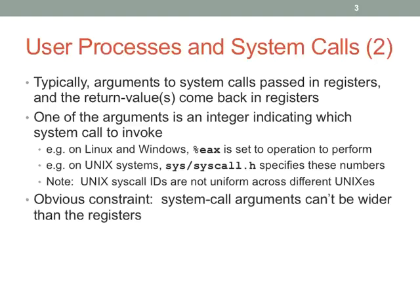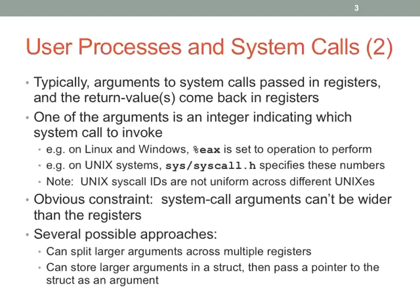There are a few constraints. System call arguments can't be wider than the registers — typically this isn't an issue, and if you have wider values you can pass a pointer to them. If you need more arguments than you have registers, you can create a separate structure and pass a pointer to it. Unix has a very simple API: most of the time you either have values that fit in a single register, or you pass a pointer to a struct. Windows is very different — system calls take data structures where the first value is the size of the structure, indicating which version you're using.